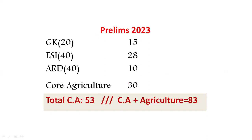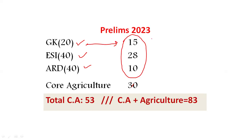Now look at the questions asked from the merit section. In merit, 20 questions are from GK, 40 from ESI, and 40 from Agriculture and Rural Development. Out of 20 questions in GK, 15 were directly from current affairs — directly from current affairs.